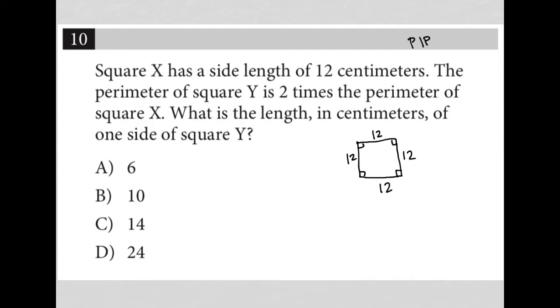The next sentence is the perimeter of square Y. Okay, so this is square X. The perimeter of square Y is 2 times the perimeter of square X. Okay, so that means I have square Y, which is larger. And if it's 2 times the perimeter of square X, basically that just means every side is twice the size of square X. So these are all 24s.